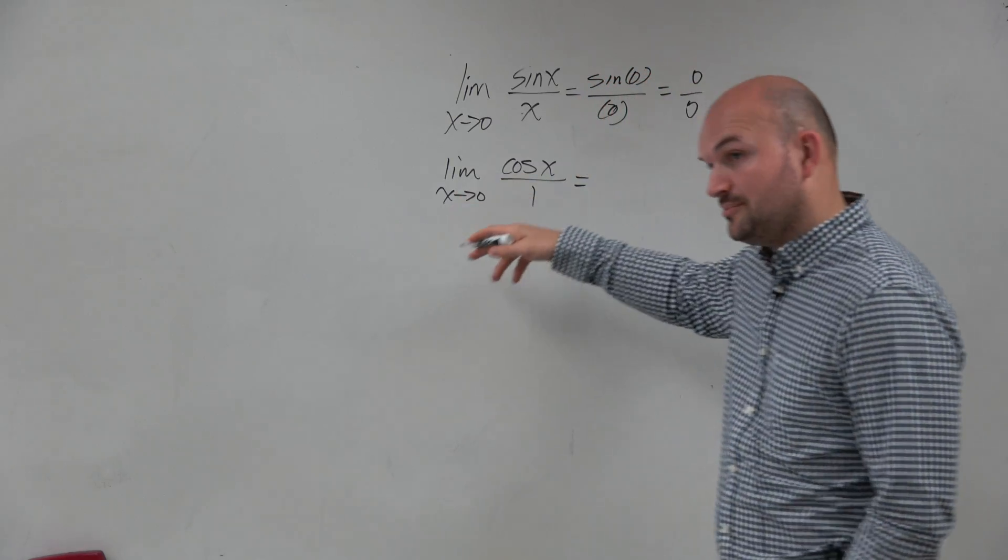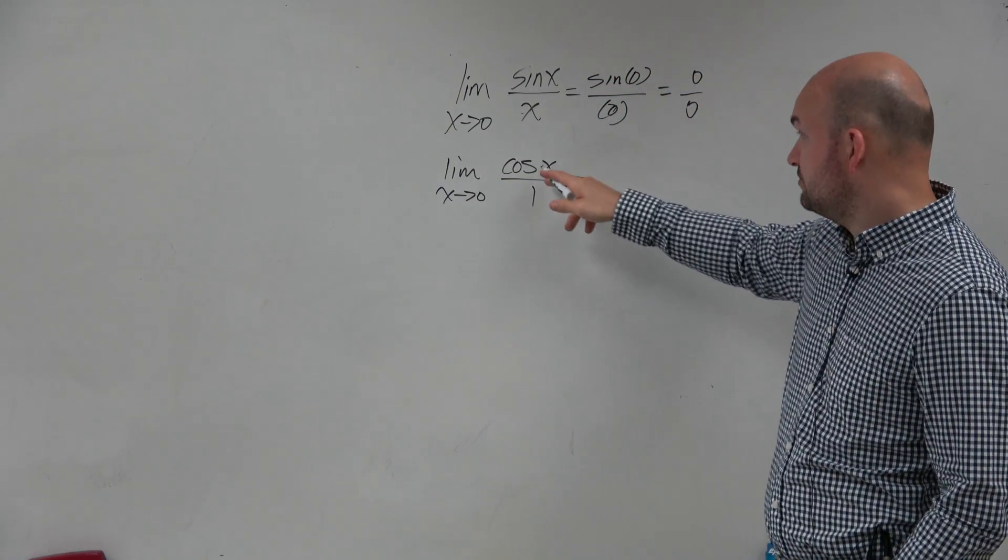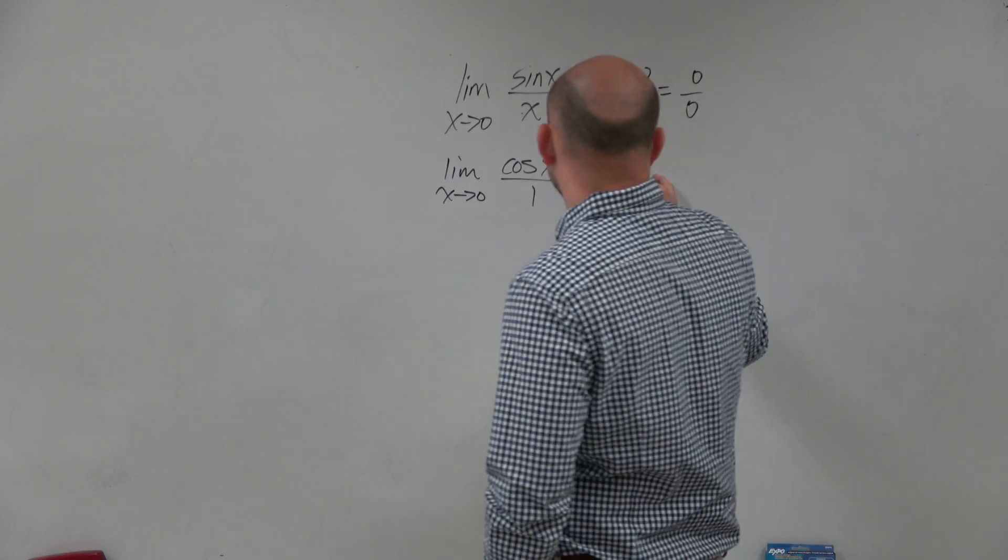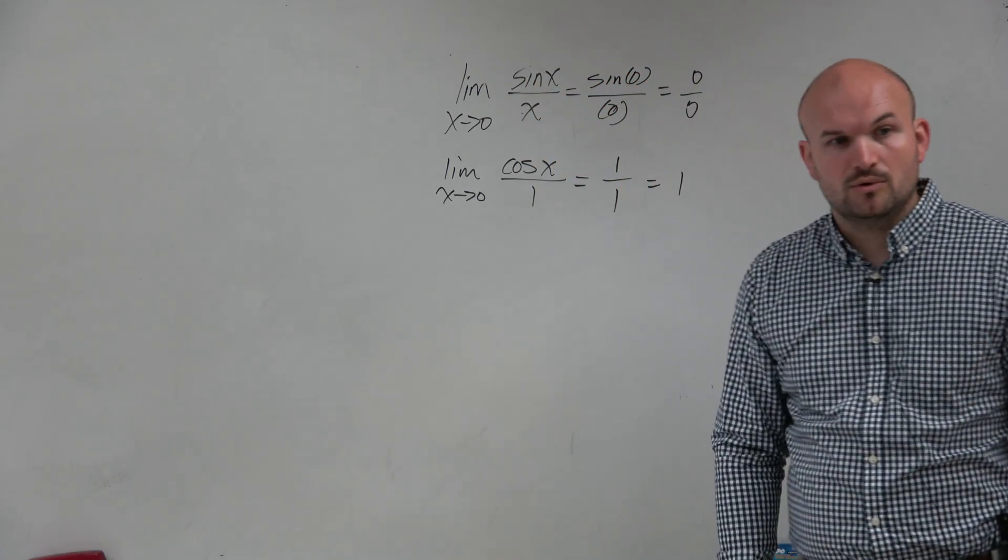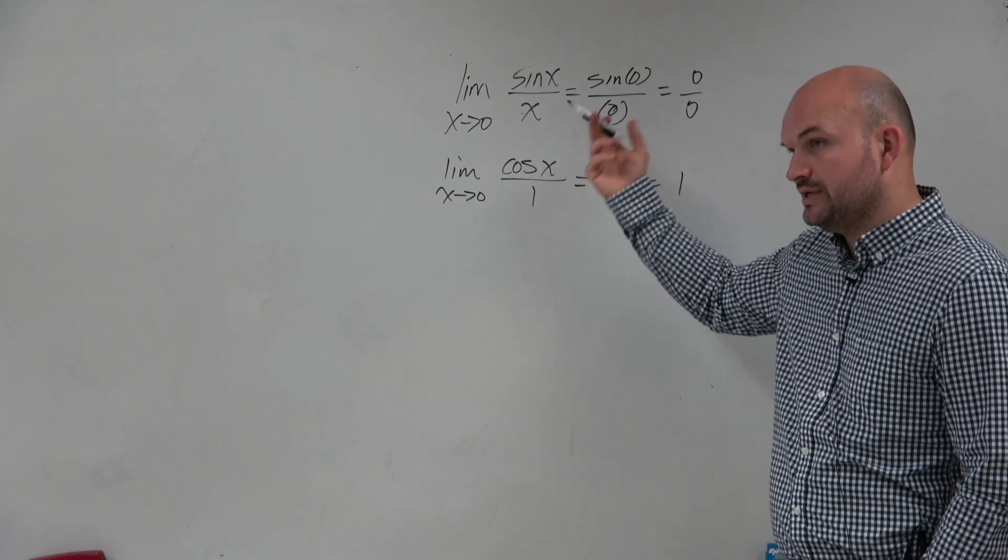And now we can apply direct substitution here. I'm not going to show the direct substitution, but cosine of 0 is going to equal 1 over 1, which equals 1, because the cosine of 0 is 1.